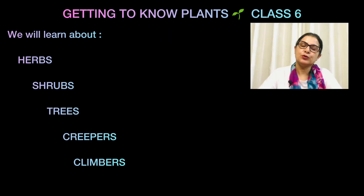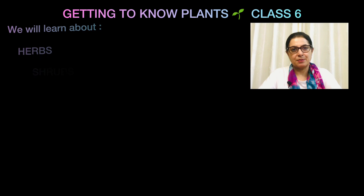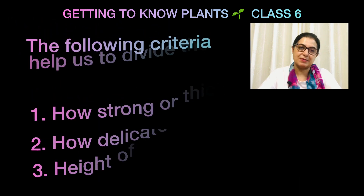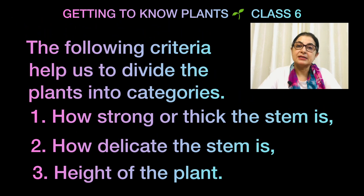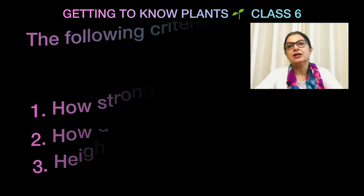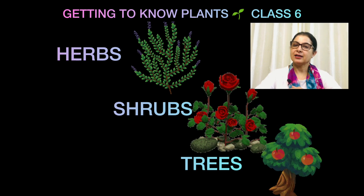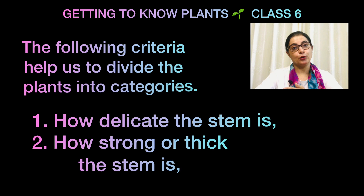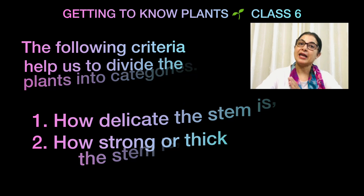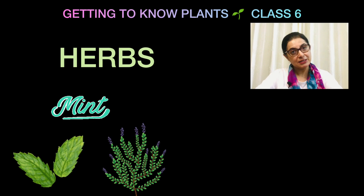There are different criteria, as I already told you in the introduction video. The first is how delicate or how strong the stem of a plant is. On that basis we divide plants into three categories: herbs, shrubs, and trees. To remember the order, think of the alphabet — H comes first, then S, then T.